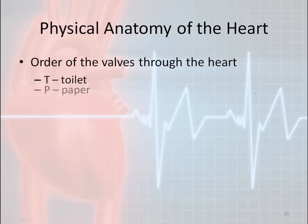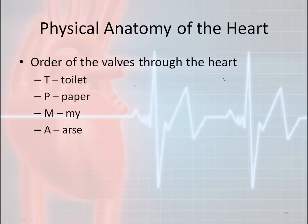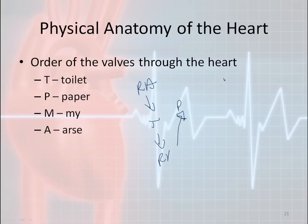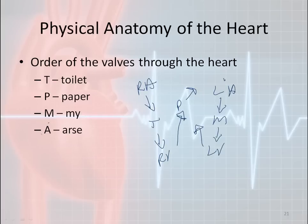A helpful mnemonic to remember the valve order is 'toilet paper my arse.' Following a drop of blood through the heart: right atrium → tricuspid valve → right ventricle → pulmonary valve → pulmonary artery → lungs → left atrium → mitral valve → left ventricle → aortic valve → aorta. So the order is: tricuspid, pulmonary, mitral, aortic.